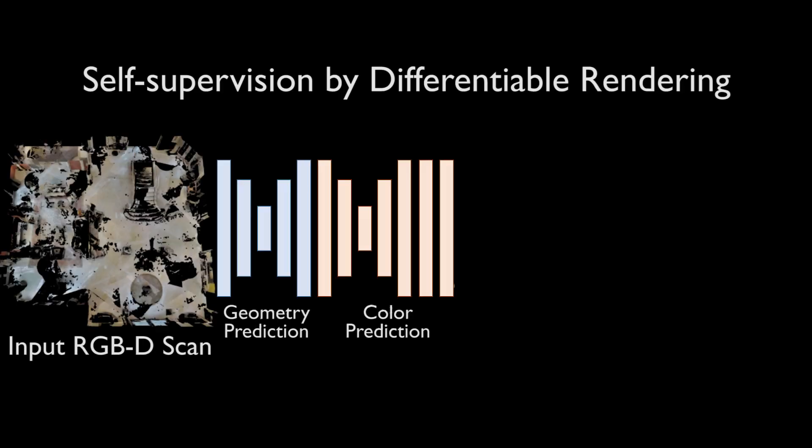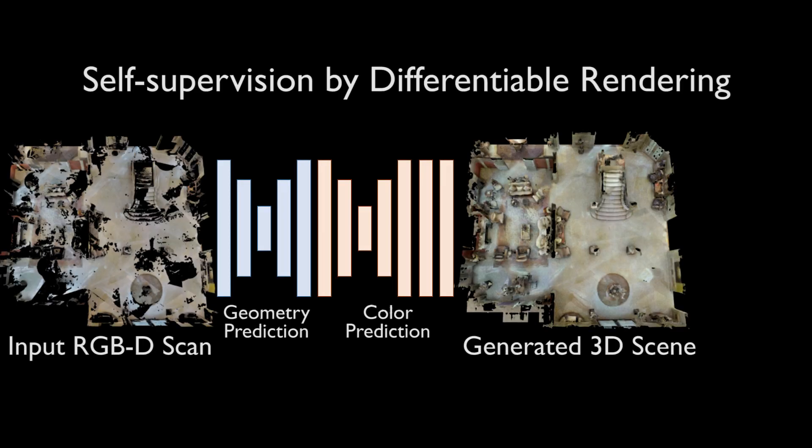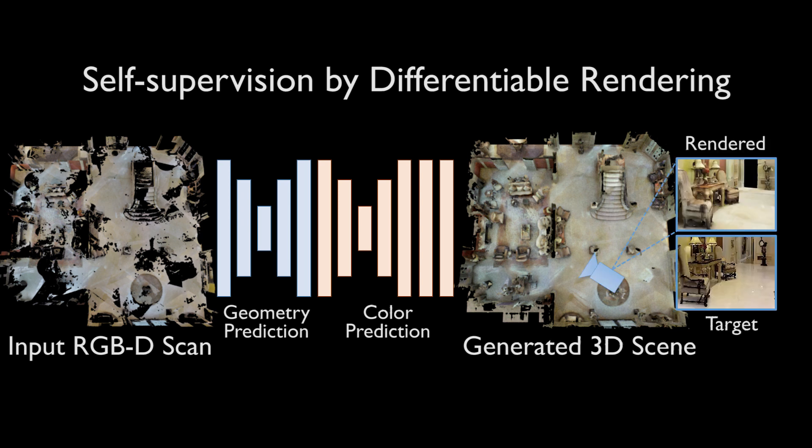Instead, we propose a 2D view-guided synthesis, leveraging differentiable rendering of our predicted 3D scene. We render views of our 3D predictions and compare them to the target images, which are complete in each individual view.